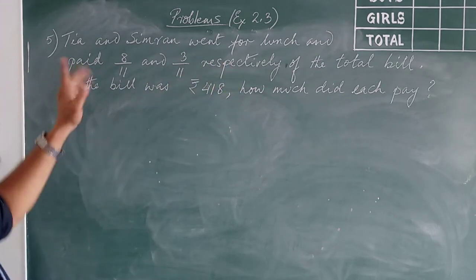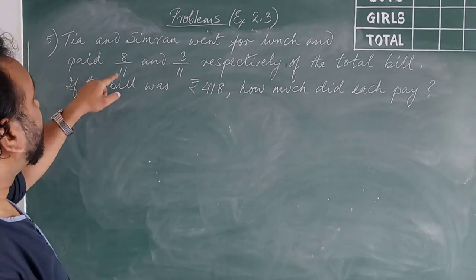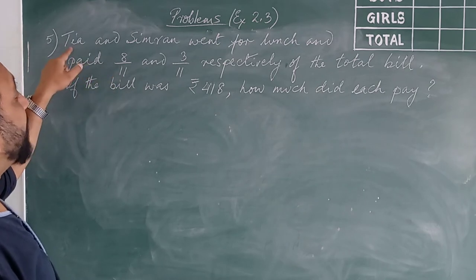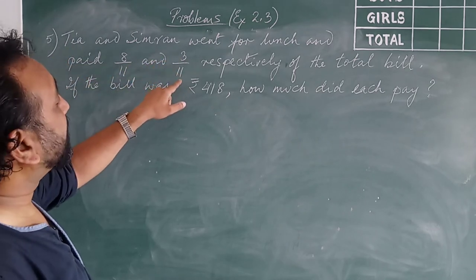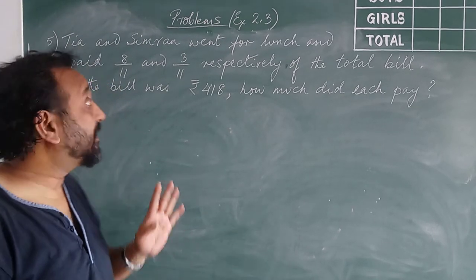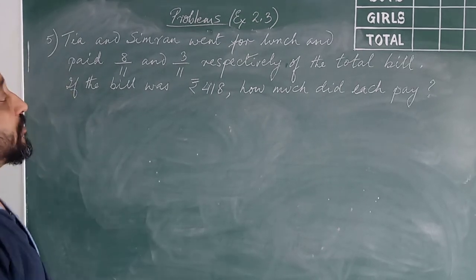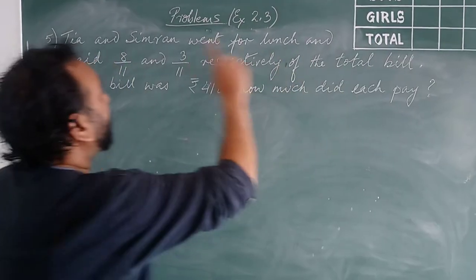Respectively means in the same order. So 8 upon 11 was paid by Tia and 3 parts out of 11 parts were paid by Simran. So Tia billed out, Simran did not have much money.